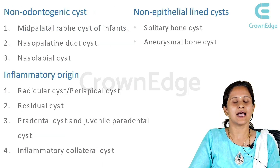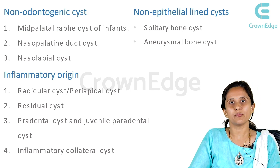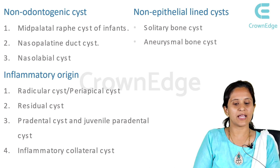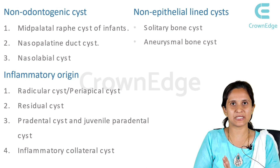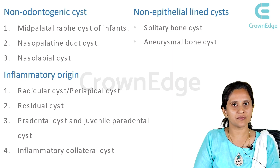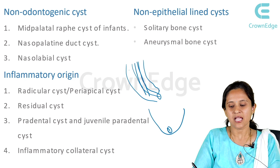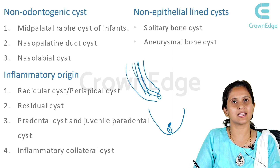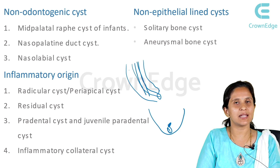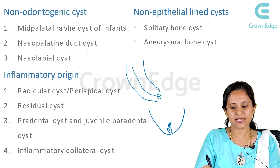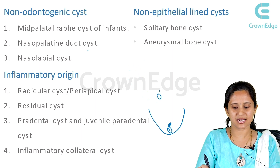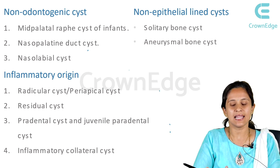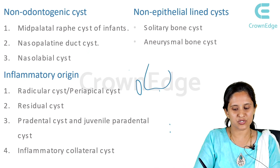Coming to non-odontogenic cysts — these are the cysts which arise because of epithelial cells that remain at the site of fusion of two embryonic processes. One is the mid-palatine raphé cyst of the infants, arising from epithelial remnants at the palatal fusion line. Next is the nasopalatine duct cyst, where remnants of the duct persist and proliferate. Then we have the nasolabial cyst — if the nasopalatine duct cyst is a hard tissue cyst (within the bone), the nasolabial cyst is a soft tissue cyst, seen on the lateral part of the nose.